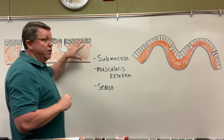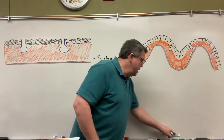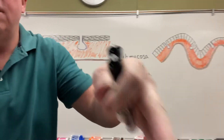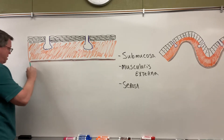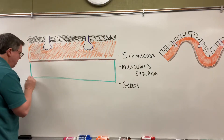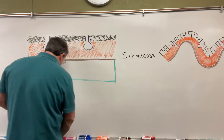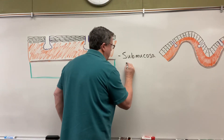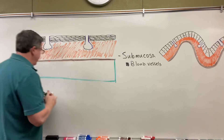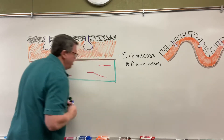The submucosa is obviously under the mucosa. Those three layers were the mucosa, and now we're going to have the submucosa. In the submucosa I'm going to have blood vessels — let's draw some blood vessels in here.